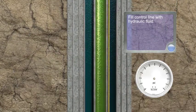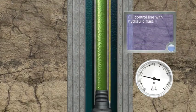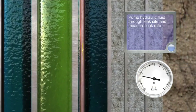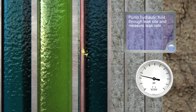Fill control line with hydraulic fluid. Pump hydraulic fluid through leak site and measure leak rate.